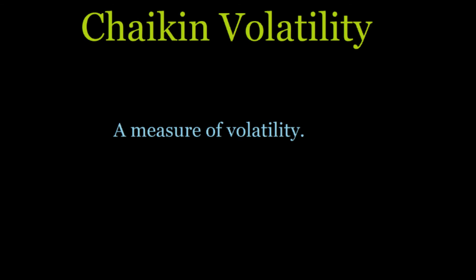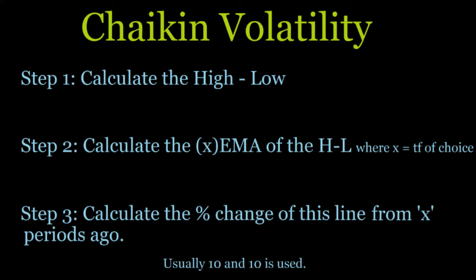The calculation of Chaikin Volatility is pretty simple. Even though I have it broken down into three steps, it's really just one step: the percent change of X periods ago of the EMA of high minus low. To break it down: first, calculate high minus low. Then calculate the exponential moving average of that high minus low — typically a 10-period EMA.